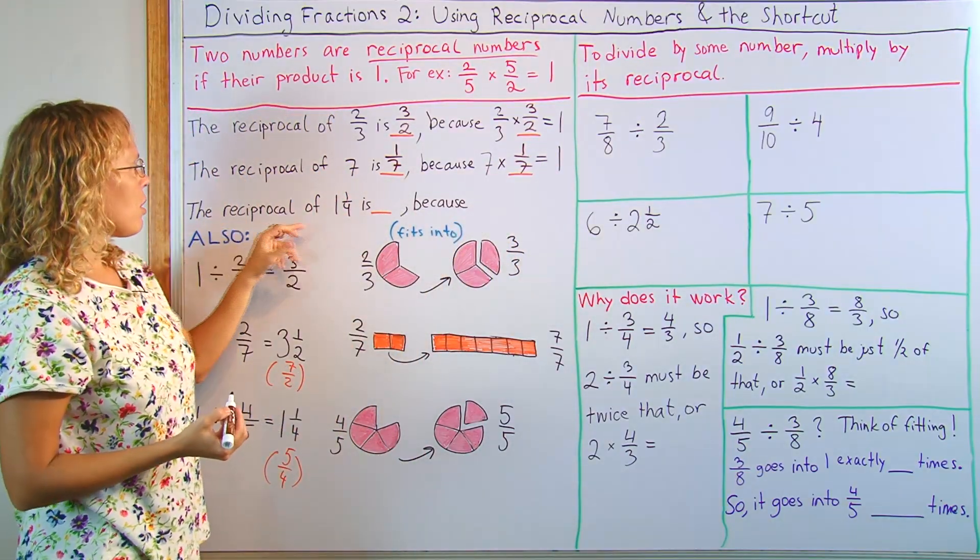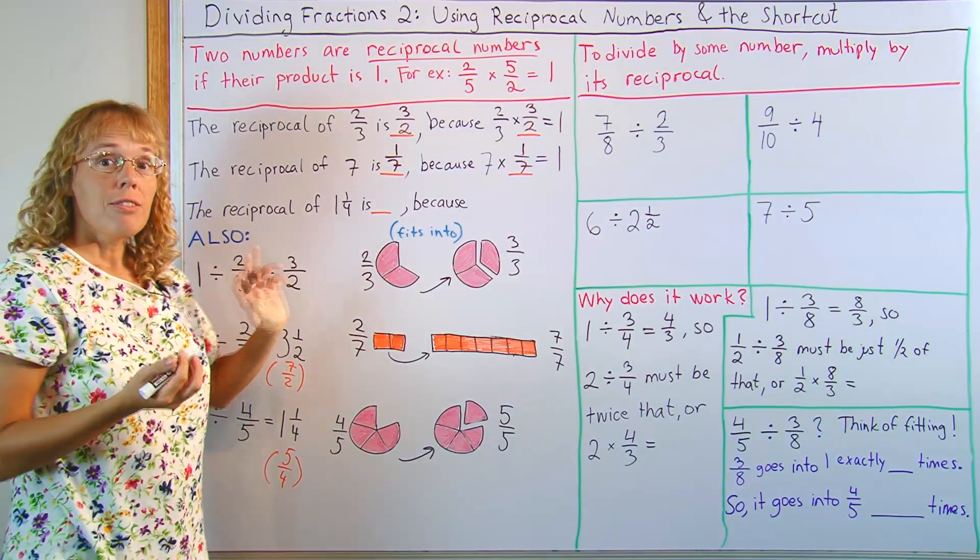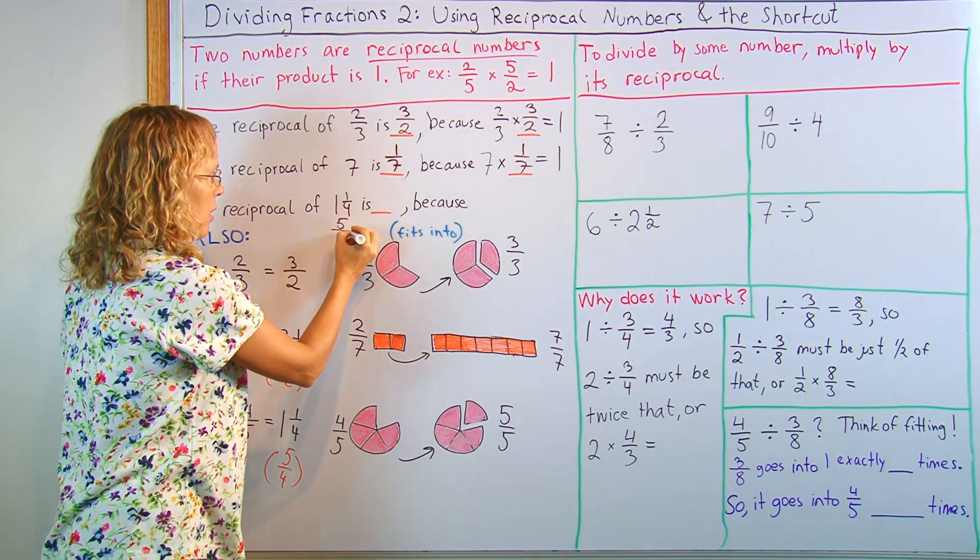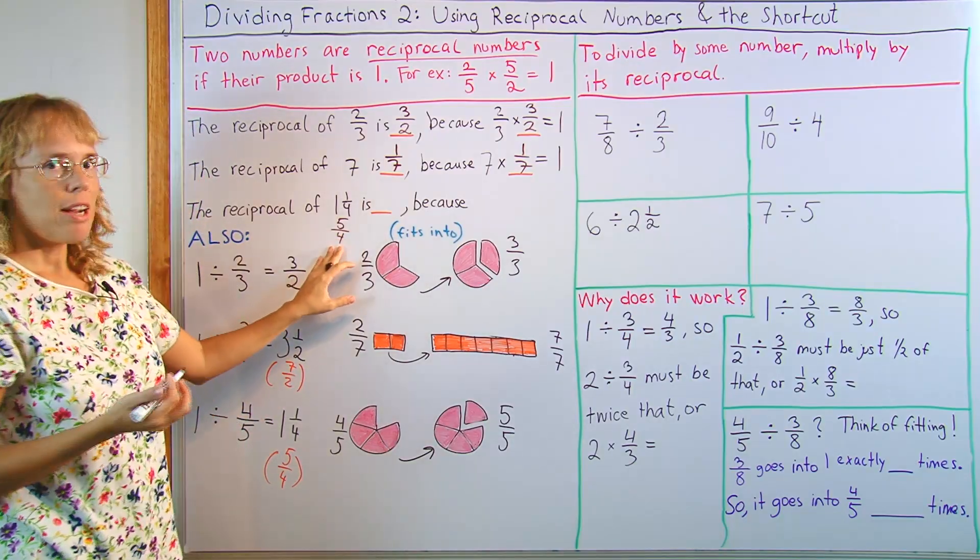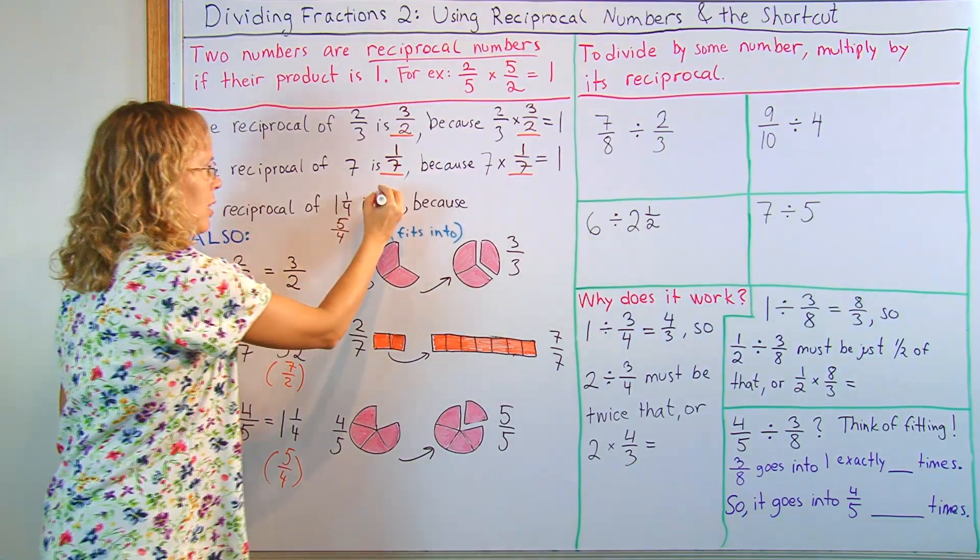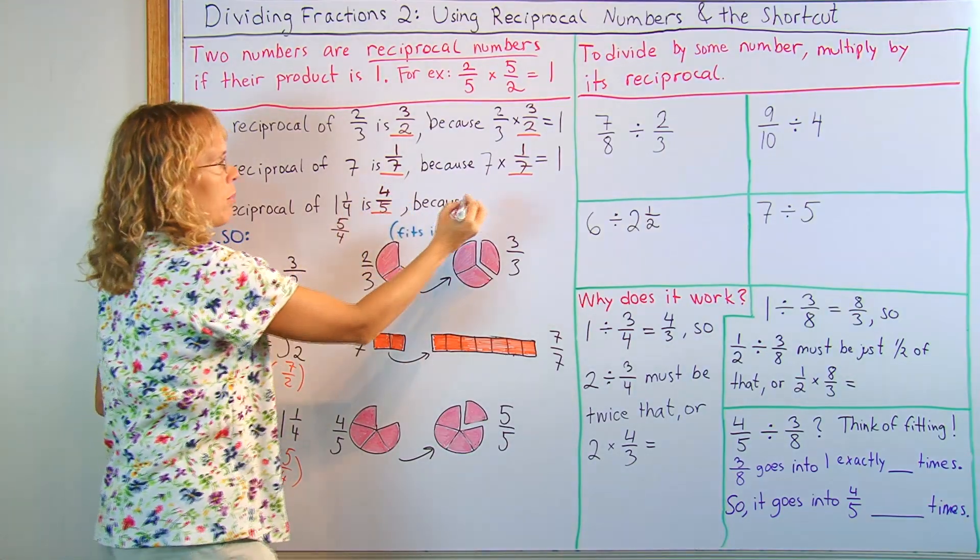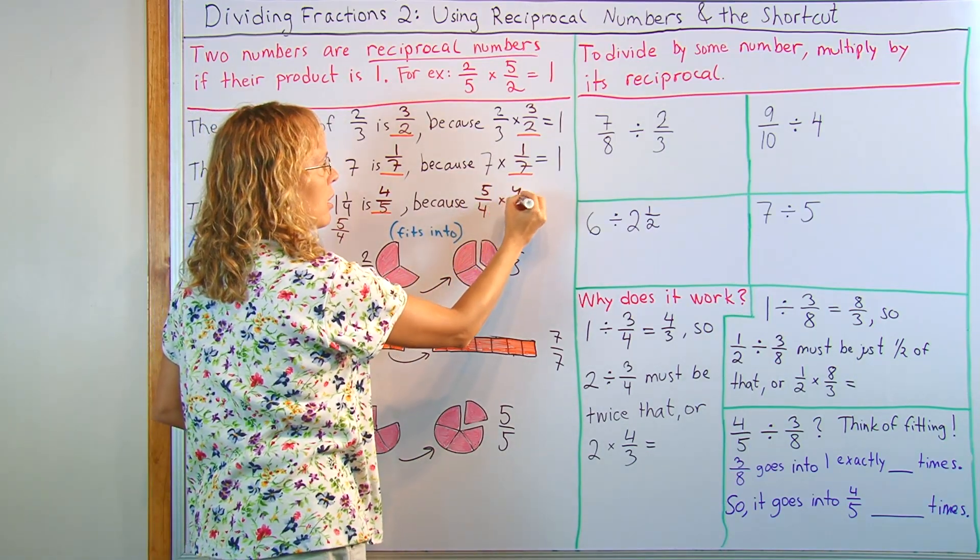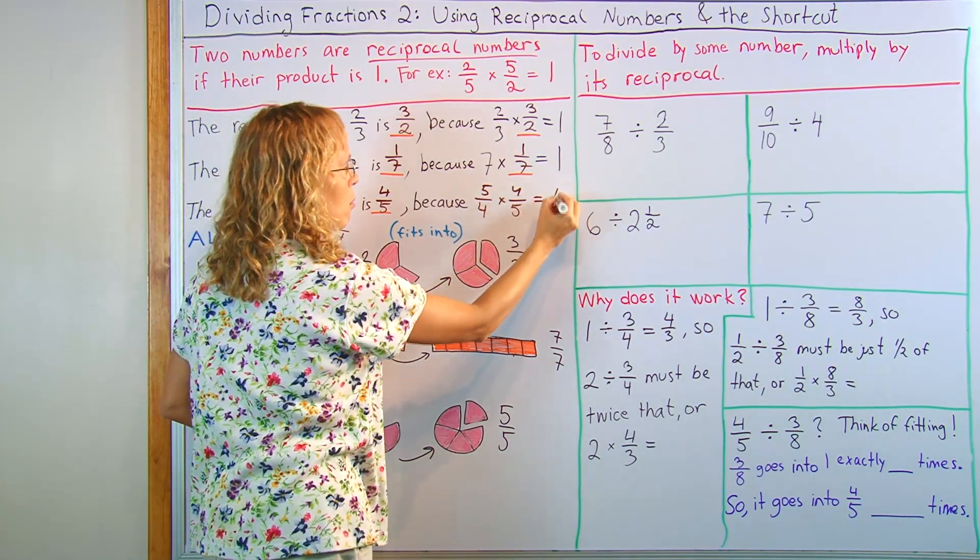And the reciprocal of one and one-fourth. First, write this as a fraction. You see, it is five-fourths. And then you can flip it. It is four-fifths. Because five-fourths times four-fifths is one.